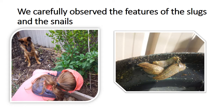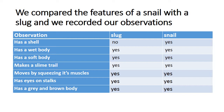We carefully observed the features of the slugs and snails while they were in their natural environment, rather than picking them up and moving them around. While the group was looking, I asked them to call out their observations and made notes. Later we put those observations into a table format. They noted whether each animal had a shell, that both had a wet, soft body, a slime trail, movement by squeezing muscles, eyes on stalks, and that the colouring was fairly similar between the two animals.